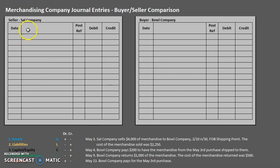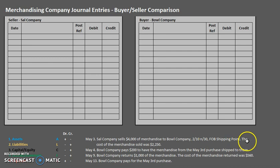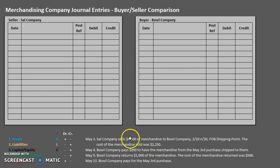Let's take a look at these four dates and record the seller entries, and then look at these four dates again from the buyer's perspective and record the buyer's entries. This first one on May 3rd: Sell Company sells $4,000 of merchandise to Bull Company, terms 2/10 net 30, FOB shipping point. The cost of the merchandise sold was $2,250.